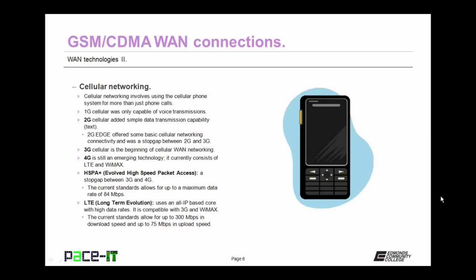As a special mention, we need to talk about evolved high-speed packet access — HSPA+. It was a stopgap between 3G and 4G networking, and is still available today. The current standard for HSPA+ allows for up to a maximum data rate of 84 Mbps. LTE — Long-Term Evolution — uses an all IP-based core with high data rates. LTE is compatible with both 3G and WiMAX. The current standard for LTE allows for up to 300 Mbps in download speeds and up to 75 Mbps in upload speeds.